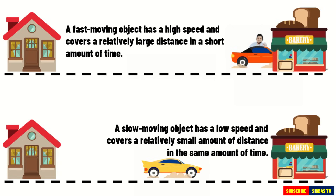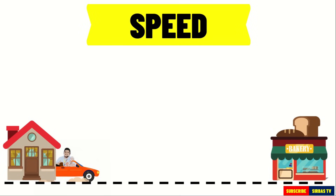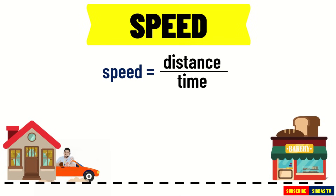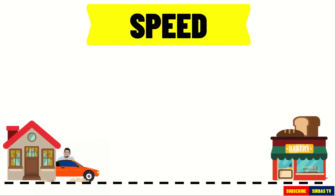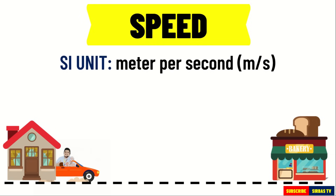Speed can be measured by dividing the distance covered by the time traveled. It can be represented by the formula: speed is equal to distance over time. The SI unit for speed is meters per second. Other units include kilometers per hour and miles per hour.